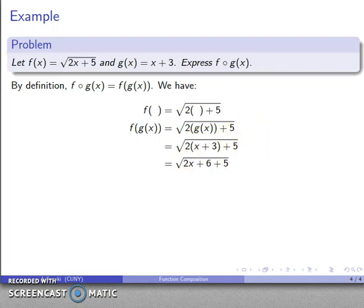I can do a little bit of algebraic simplification after that. I'll expand out the 2 times x plus 3 and add 6 plus 5 to get me 11. And here's my f of g of x equals square root 2x plus 11.